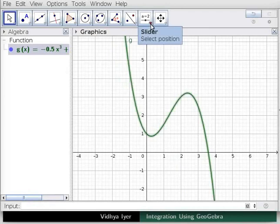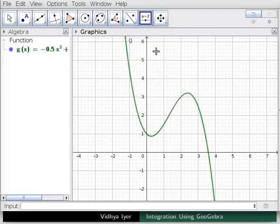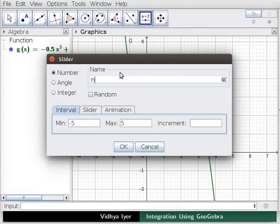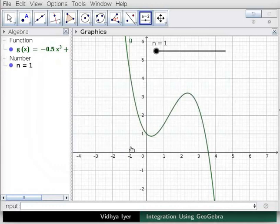Note the graph in graphics view and its equation in algebra view. Using the slider tool, create a number slider n in graphics view. It should range from 1 to 50 in increments of 1. Drag the resulting slider n to 5.